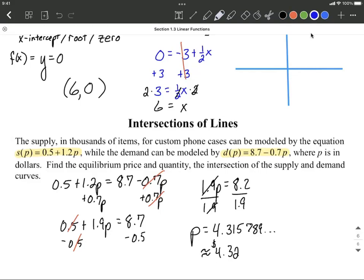I'm going to choose S of P. So going back to S of P, the supply function, I'm going to actually try to plug in the 4.315789. We're going to get the most accurate answer possible by plugging in a bunch of digits first and then rounding at the end.